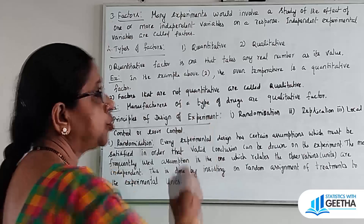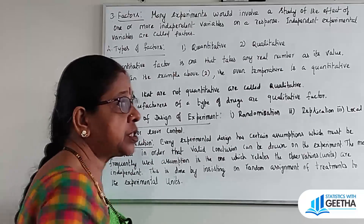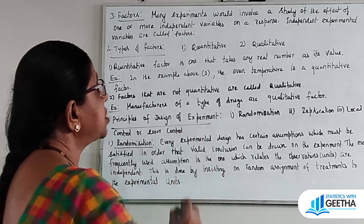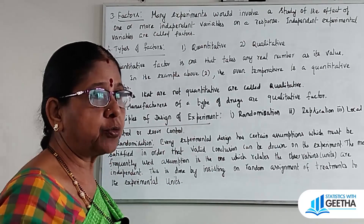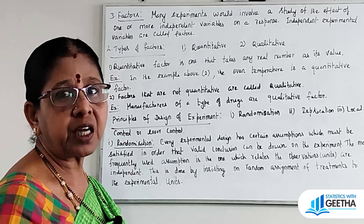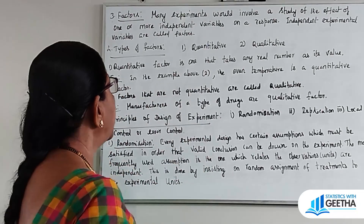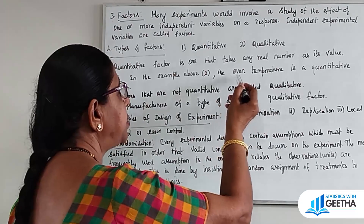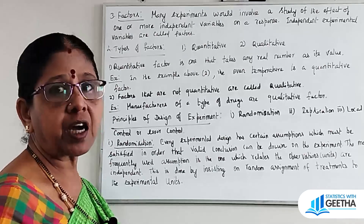There are two kinds of factors: quantitative and qualitative. A quantitative factor is one that takes any real number as its value. For example, in the cake example, the temperature is a quantitative factor — with values 200, 300, and 400 degrees Fahrenheit, which are real numbers.